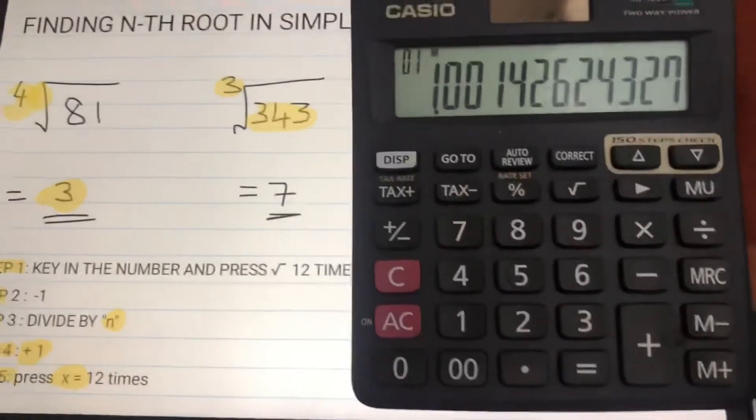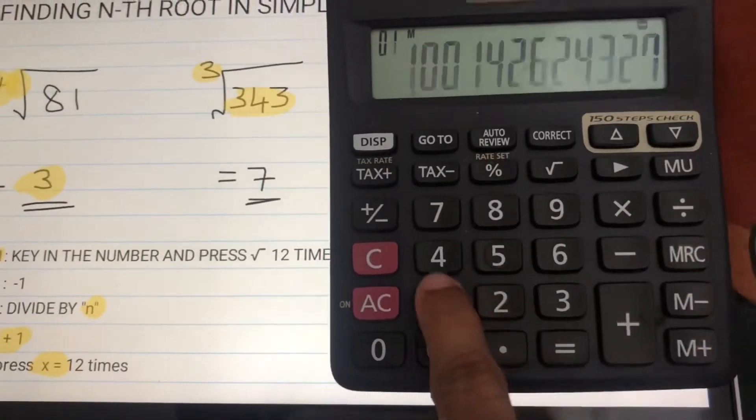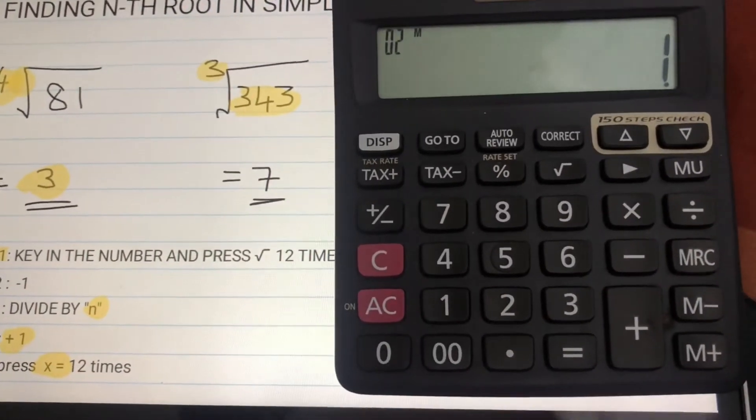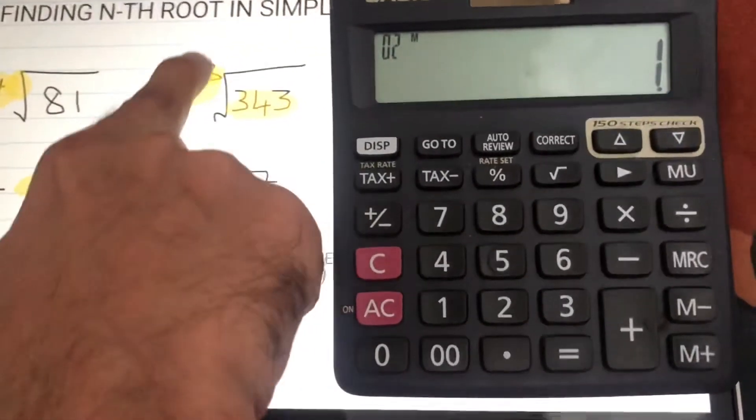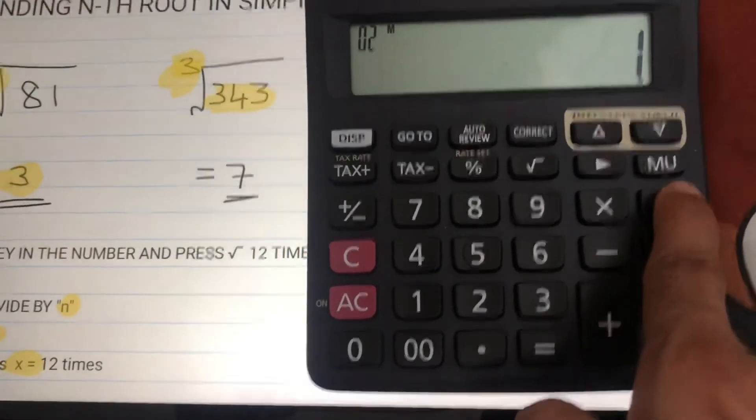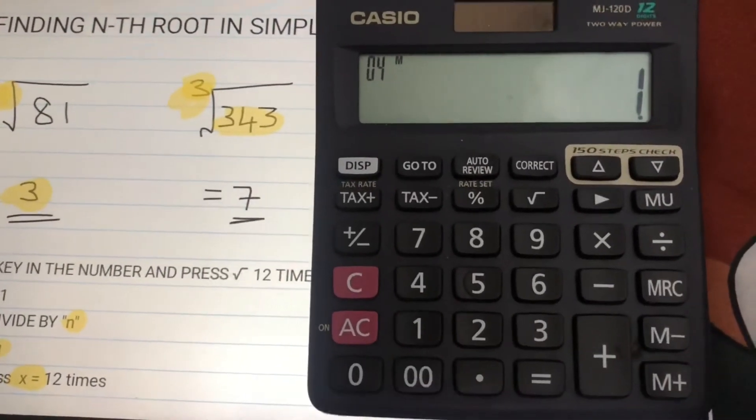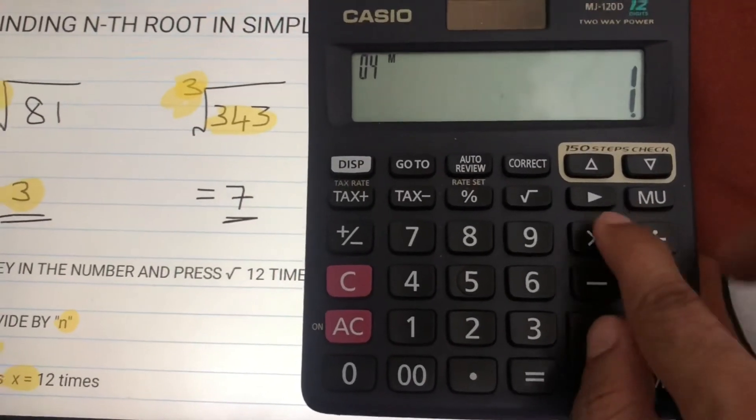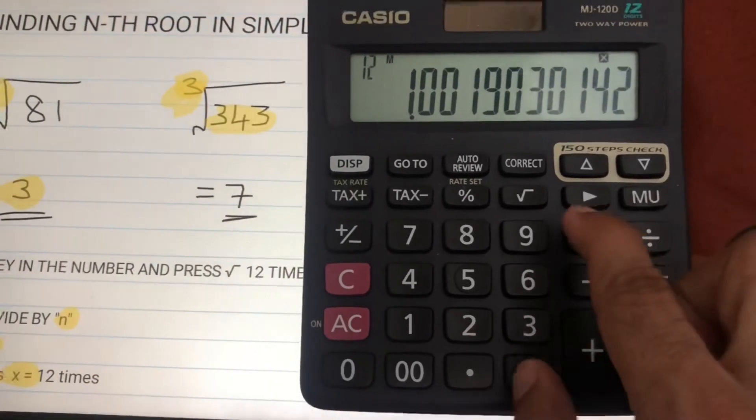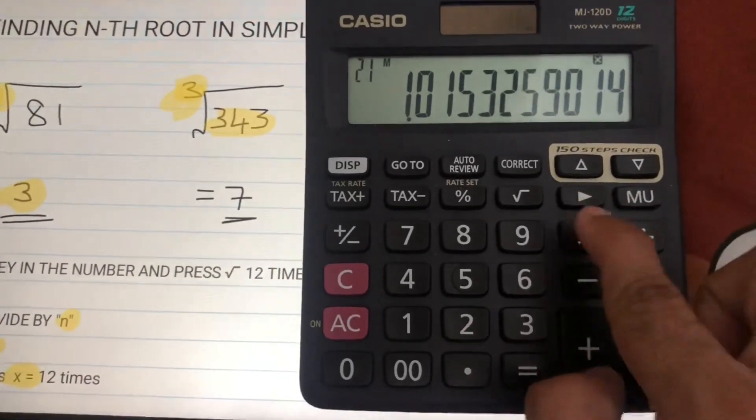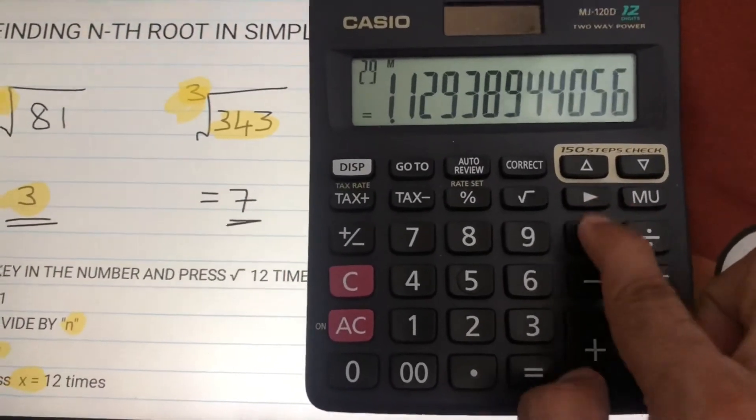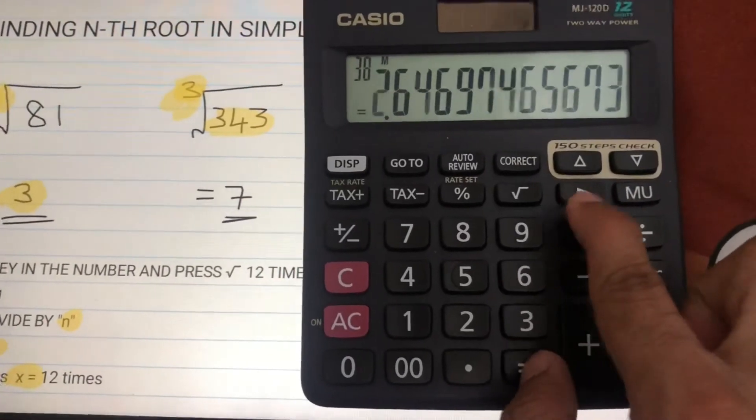Done. Next is minus 1. Next is divide by n. Here n is 3, so I'll divide by 3. Next step is plus 1, done. Now multiply equals 12 times: 1, 2, 3, 4, 5, 6, 7, 8, 9, 10, 11, 12.